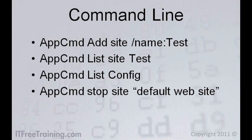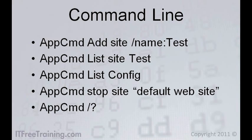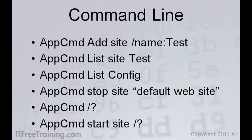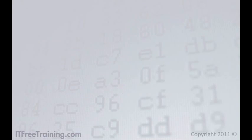If you ever need help using a command, use /?. If you need help with a particular command, enter the command followed by /?. Using appcmd, you can automate your IIS configuration. If you have a lot of IIS servers, using the command line can speed up making changes to your sites.